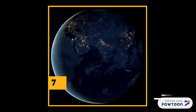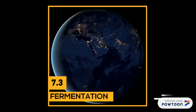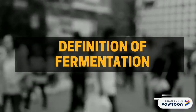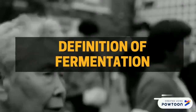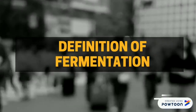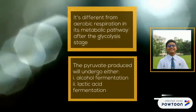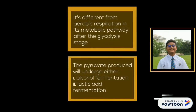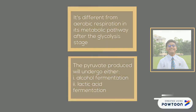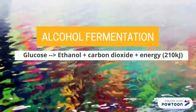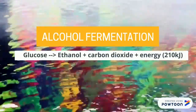Let's continue with the last subtopic: 7.3 Fermentation. Fermentation is the incomplete breakdown of glucose in conditions of limited oxygen or without oxygen. Fermentation is different from aerobic respiration in its metabolic pathway after the glycolysis stage. After glycolysis, the pyruvate produced will undergo either alcohol fermentation or lactic acid fermentation. Alcohol fermentation is the incomplete breakdown of glucose to ethanol, carbon dioxide, and energy.